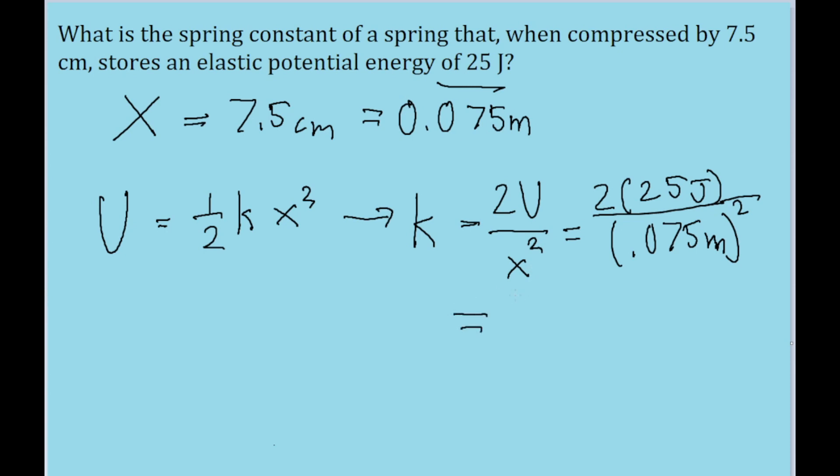So we put this into our calculator, and we find a spring constant of about 8.9 times 10 to the power of 3, and the units are newtons per meter. And that's the answer to this problem.